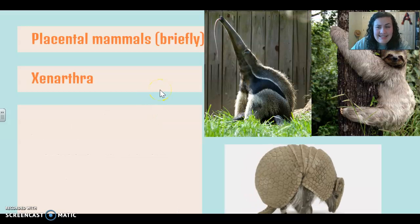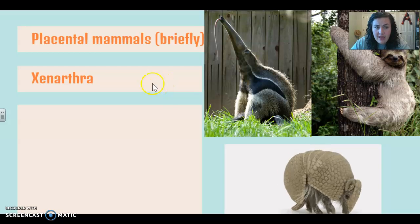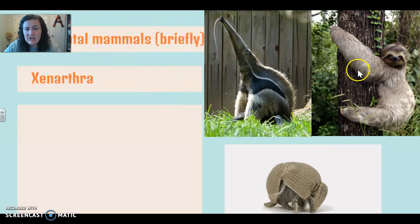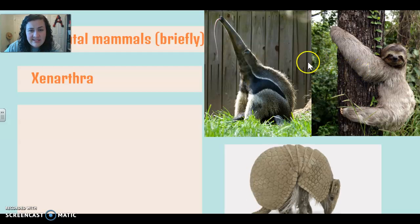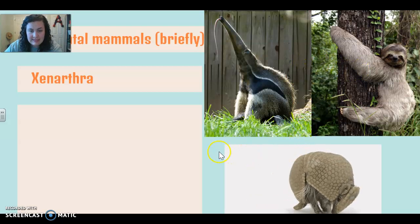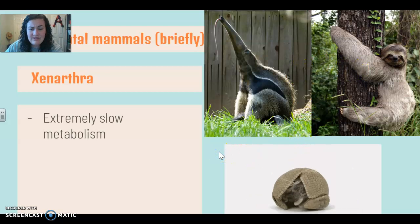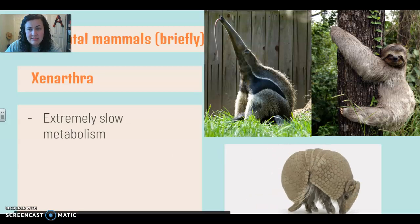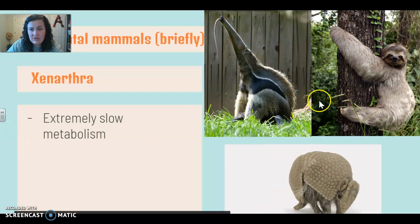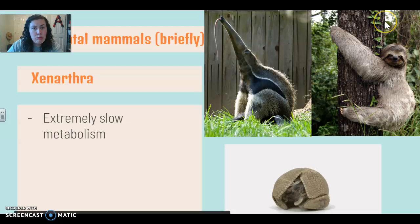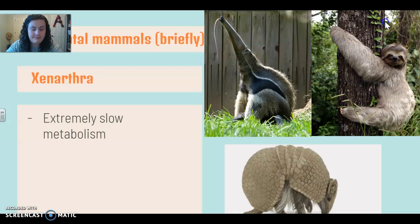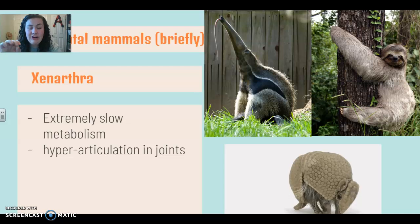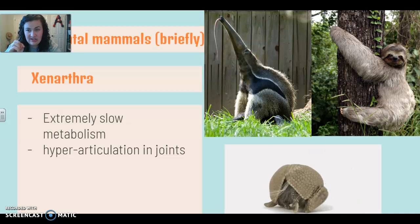Our next group is the Xenarthra. This is going to include your sloths, your anteaters, and your armadillos. As a group they have extremely slow metabolisms — it's very evident in the sloths, who don't move very fast at all. And they have hyper articulation in their joints, which is kind of gross.